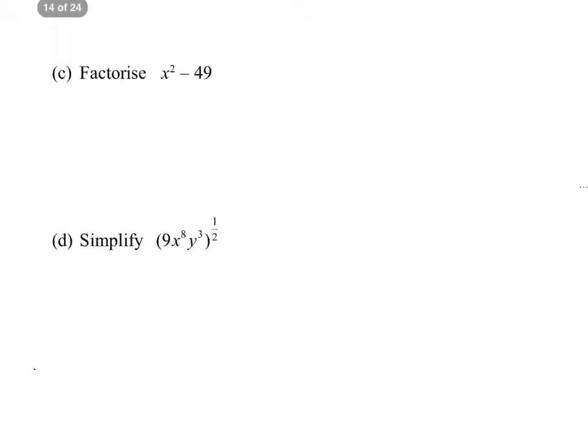Now, factorising x squared minus 49. These are both squares. Remember, 49 is 7 squared. So, if you know your difference of squares, you'll know this will be x plus 7 times x minus 7. Really easy to do if you've learnt the difference between two squares.